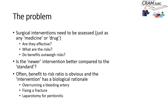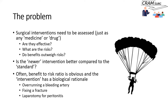Some examples include overrunning a bleeding artery, fixing a fracture, laparotomy for peritonitis, and closing a duodenal ulcer perforation — interventions where the benefit is so clear-cut that you would not do a randomized control trial. There was a satirical article in the BMJ some years ago about assessing the effectiveness of using a parachute when jumping from an airplane, making the point that when the benefit is so obvious, detailed assessment is unnecessary.